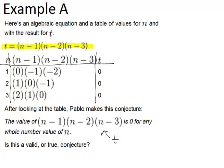is zero for any whole number value of n. So he's basically saying, no matter what number I plug in over on the left for n, my answer is always going to end up being zero. Because that's what happened the first three times, so maybe it will always happen.